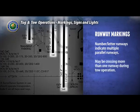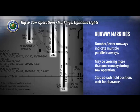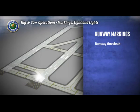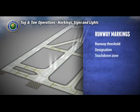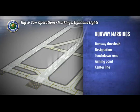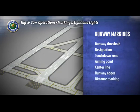Therefore, you may be crossing more than one runway and will have to hold at each runway hold position. You will not receive air traffic control instructions to cross all runways at once. Runway markings include runway threshold, designation, touchdown zone, aiming point, center line, runway edges, and distance markings.